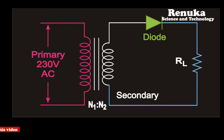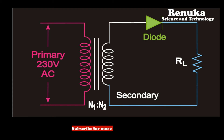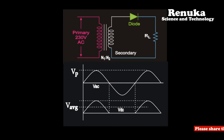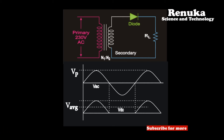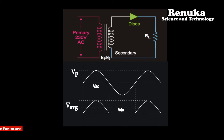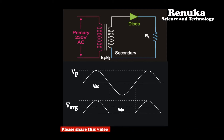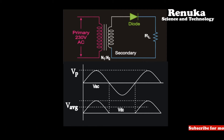This rectifier is connected at the secondary of a step-down transformer. The AC mains supply of 230 volts is connected at the primary. During one half cycle, the diode in the rectifier circuit conducts and current flows only for that half cycle. In this way, bidirectional current is converted into unidirectional current, and AC voltage is converted into DC.